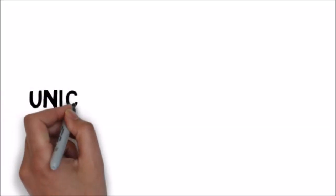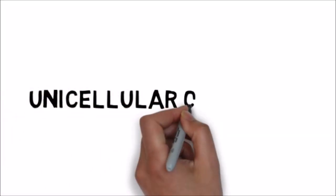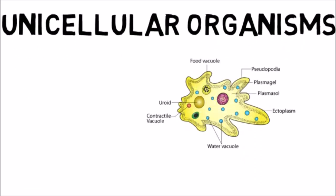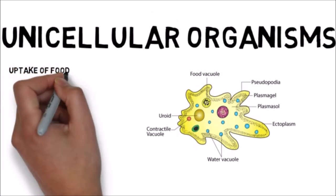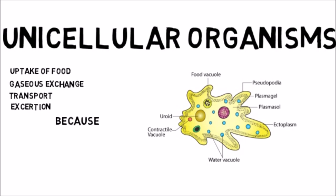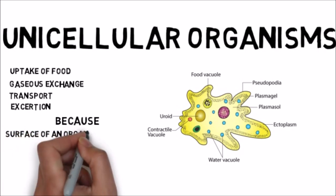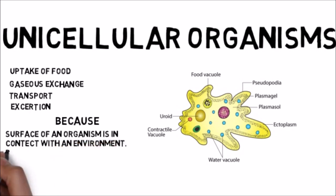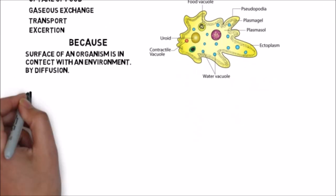In unicellular organisms, no specific organ is present for performing different tasks such as uptake of food, gaseous exchange, internal transport or excretion because they are tiny objects and their entire surface is in contact with the environment. So by simple process of diffusion, they can perform all these tasks.